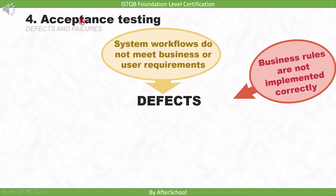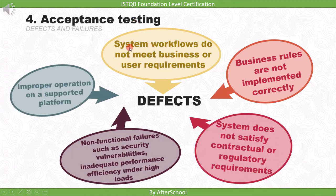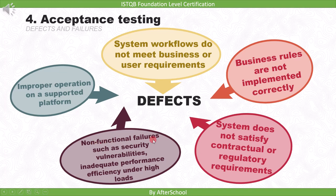Now let's look at acceptance testing defects. In acceptance testing, we focus on business requirements and check whether the built system meets business rules. The first defect is system workflows do not meet business or user requirements. The second is business rules are not implemented correctly. The third is the system does not satisfy contractual or regulatory requirements. Since the complete system is now available and tested from the user's point of view, we can also find non-functional failures such as security vulnerabilities or inadequate performance efficiency under high loads.